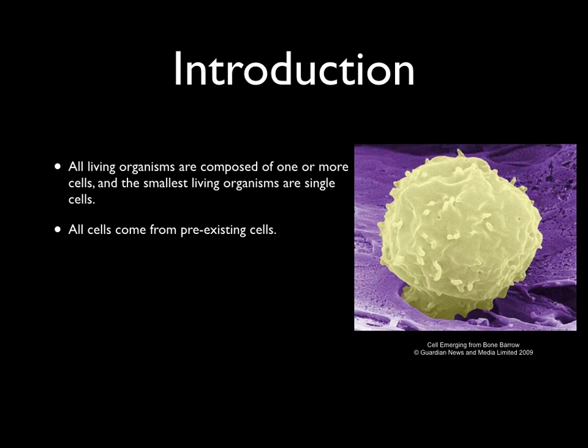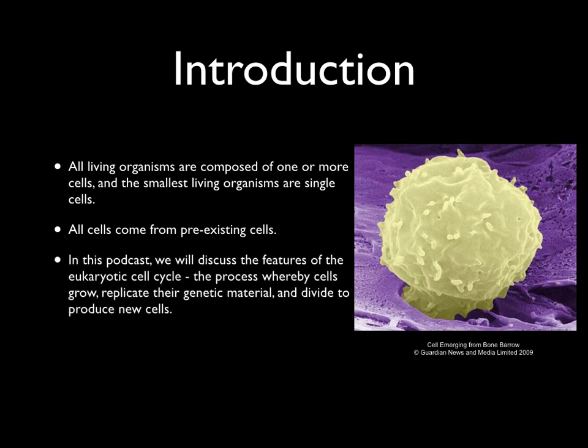Throughout our daily activities, the cells that make up our bodies are constantly being worn away and replaced by new cells. In today's lab we'll focus on the features of the eukaryotic cell cycle — the process whereby cells grow, replicate their genetic material, and divide to produce those new replacement cells.